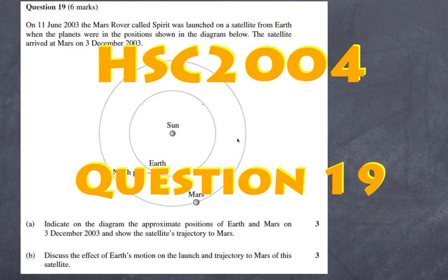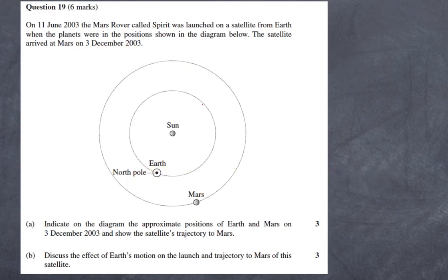So let's go through the question. The question says a Mars rover called the Spirit was launched on a satellite from Earth when the planets were in positions as shown. The satellite arrived at Mars and the first thing we need to do is to indicate the approximate positions of Earth and Mars.